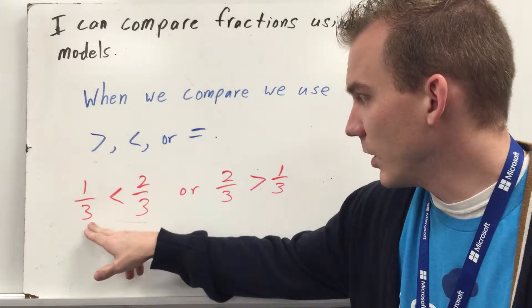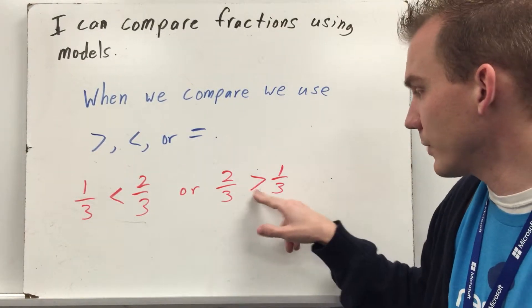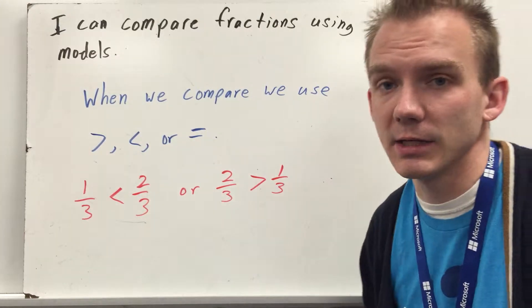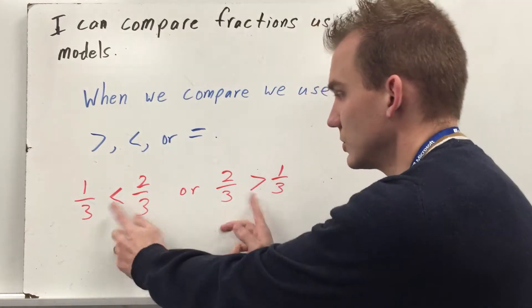For example when you have one-third is less than two-thirds, keep in mind that can also be written as two-thirds is greater than one-third. So it's telling me the exact same thing, it's just telling me in a different order. And that's alright, you just need to make sure you switch the symbol.